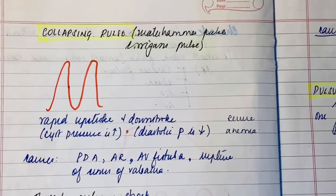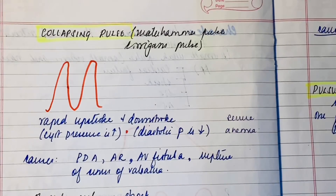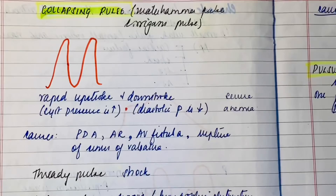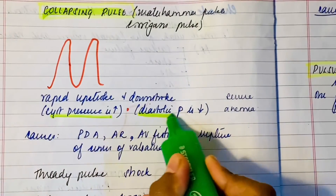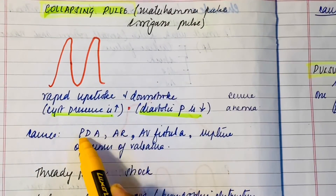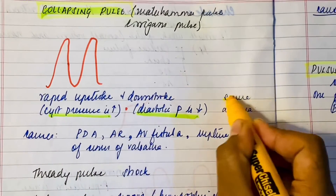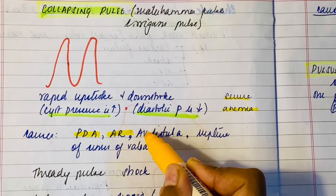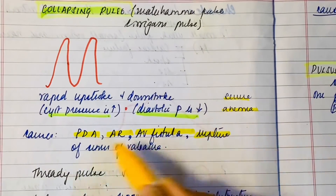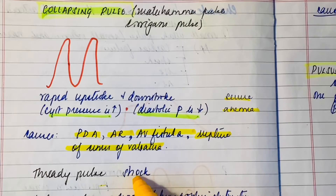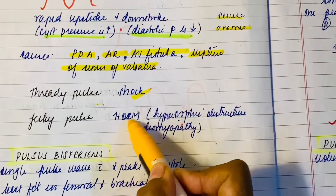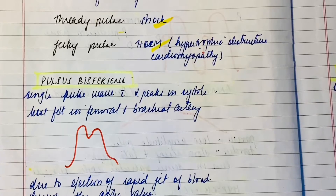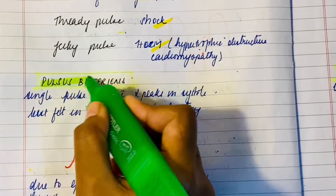A collapsing pulse (water hammer or Corrigan's pulse) has a rapid upstroke when systolic pressure is high and a rapid downstroke when diastolic pressure is low. It is seen in severe anemia, patent ductus arteriosus, aortic regurgitation, AV fistula, and rupture of sinus of Valsalva. A thready pulse is seen in shock, and a jerky pulse can be seen in HOCM (hypertrophic obstructive cardiomyopathy).